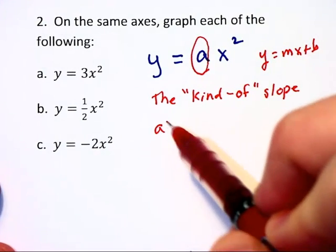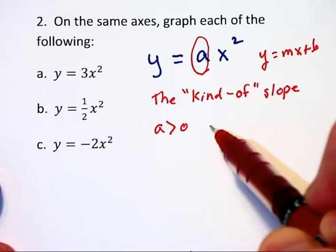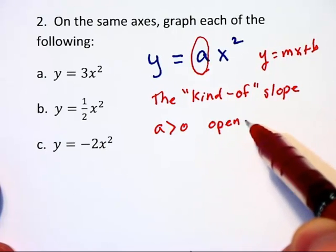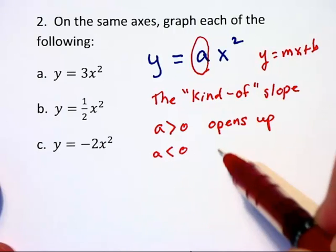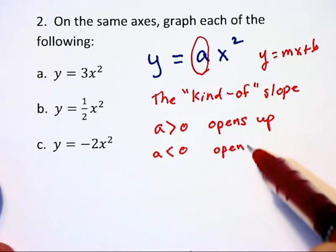If a is greater than zero, positive, then the parabola is going to open up. If a is less than zero, then the graph opens down.